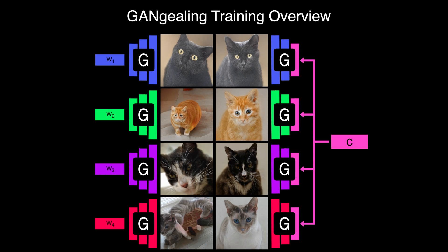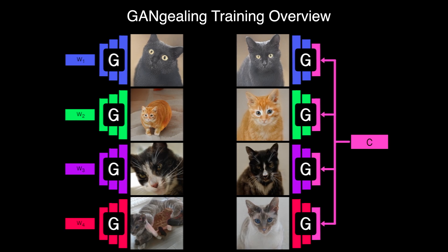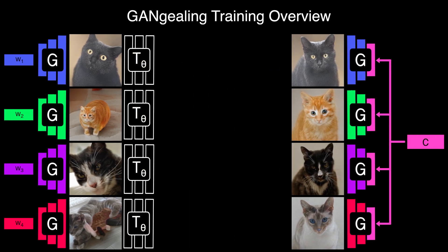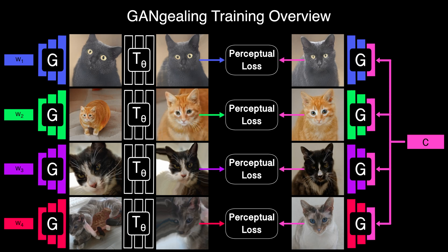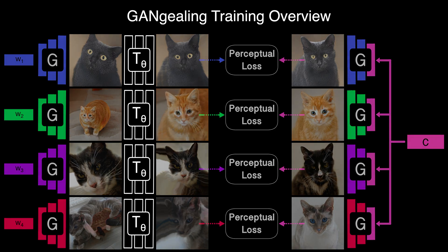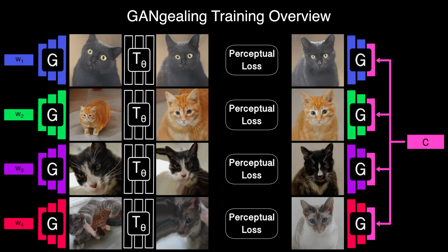GANGEALING is an instantiation of our GAN-supervised learning framework where we jointly learn a neural network along with its GAN-generated training data. For each training pair, our spatial transformer observes the input fake image and predicts and applies a sampling grid to transform it into the target image. Finally, we apply a perceptual loss between the prediction and the target. A critical point to make this system work is to update both the spatial transformer network itself as well as C, our learned target mode. Note also that the generator's weights are frozen throughout this process.